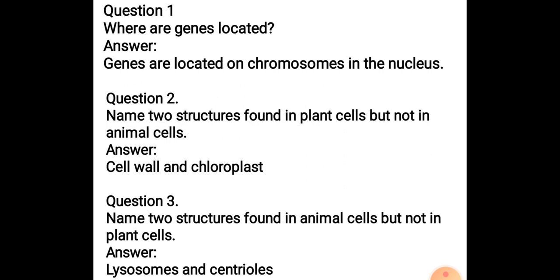Question 2: Name two structures found in plant cells but not in animal cells. The two structures are cell wall and chloroplast. These are characteristic features of plant cells. Question 3: Name two structures found in animal cells but not in plant cells. The two structures are lysosomes and centrioles. This is also an identification feature.